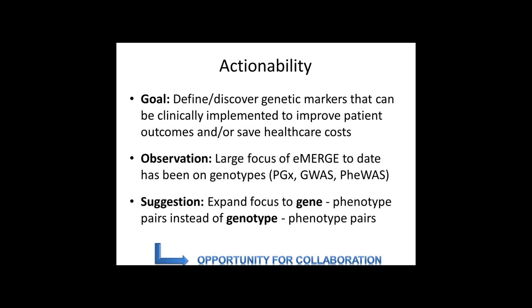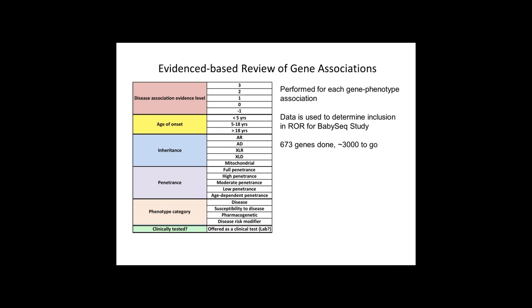Although I don't think I have very specific messages within the area of actionability, I do think it's an opportunity for collaboration. Through the BabySeq study, which is one of the newborn screening genome grants, we've been doing an evidence-based review of gene-phenotype associations. We're through 673 genes and have 3,000 more to go, systematically evaluating the evidence for gene-disease associations on a ranking of minus one to three, as well as categorizing a variety of other fields on each gene.